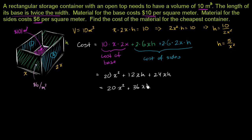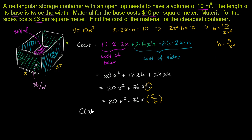Now we substitute h equals 5 over x² back into our cost equation. So cost as a function of x becomes 20x² plus 36 times x times (5 over x²). That's 20x² plus 180 times x to the negative first power — cost as a single-variable function of x.